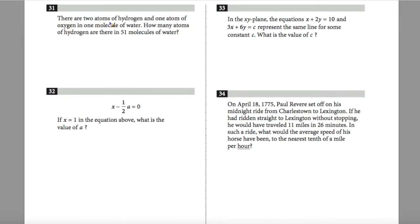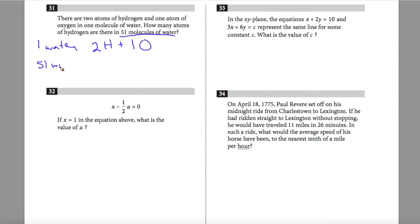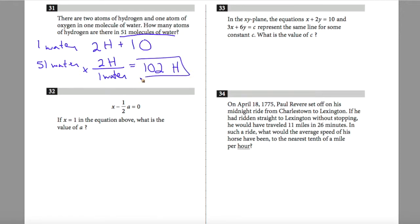Question 31 states: there are two atoms of hydrogen and one atom of oxygen in one molecule of water. How many atoms of hydrogen are there in 51 molecules of water? If I have 51 molecules of water, my ratio is per one water I have two atoms of hydrogen. So this is going to be 51 times 2, which gives me 102 atoms of hydrogen. So 102 is my answer.